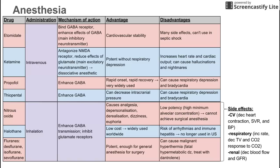Next we're going to talk about the three inhalation anesthetics. The first one is nitrous oxide. The mechanism of action is to enhance GABA transmission — enhancing the inhibitory neurotransmitter — and also to inhibit glutamate receptors, inhibiting the excitatory neurotransmitter. Both of these mechanisms should have an anesthetic effect. Nitrous oxide causes analgesia, depersonalization, derealization, dizziness, and euphoria. This is often called laughing gas.